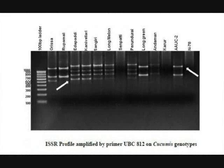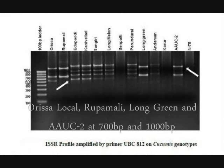The gel picture for the PCR amplified products using primer UBC812 shows specific bands for Orisa Local, Rupamali, Long Green, and AAUC2 at 700 base pairs and 1000 base pairs.